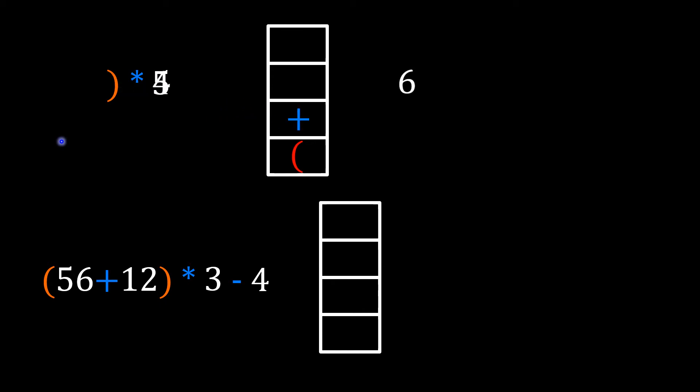The number 4, an operand, moves over to the postfix notation. Now this is where it gets interesting with our closing bracket. We look for the corresponding opening bracket and pop everything from the stack up to that opening bracket — in this example, we pop the plus operator and move it over to the postfix notation. The next character is the multiply operator, which is pushed onto the top of the stack. The last character in our infix notation is the operand 5, which moves over to the postfix.